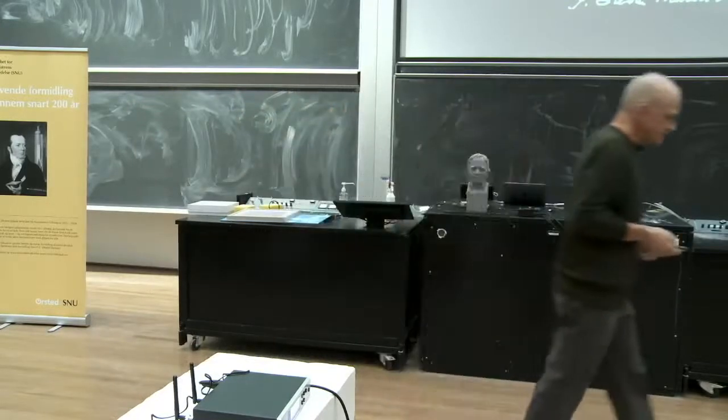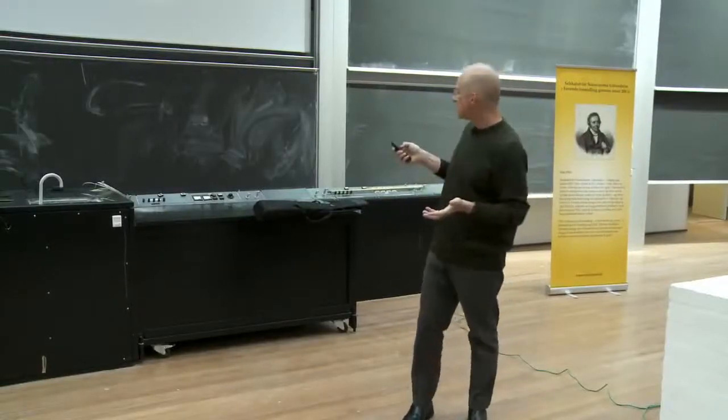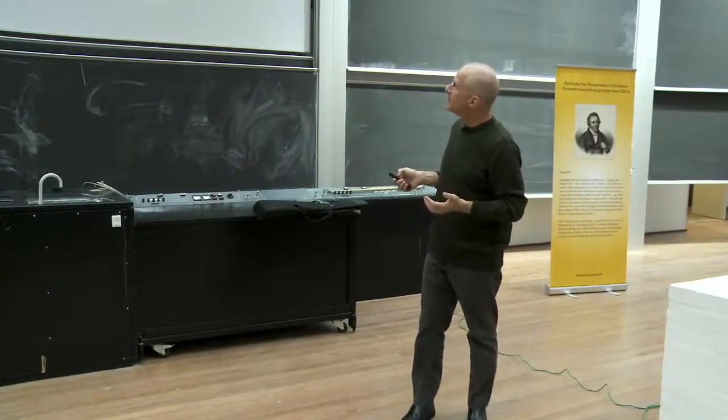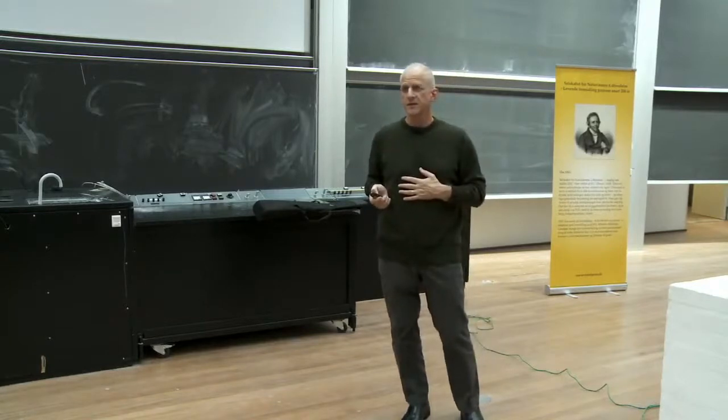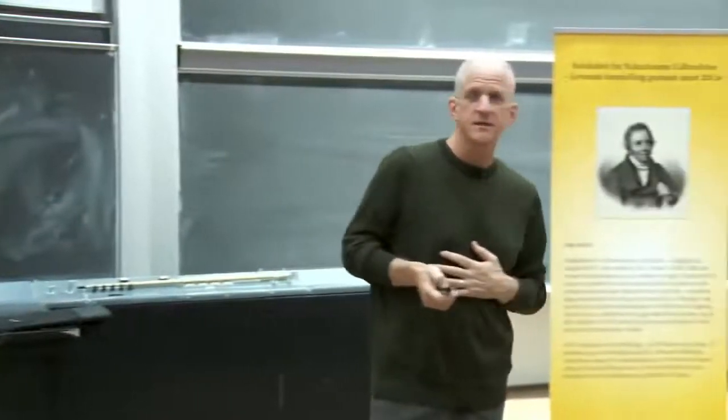In the decades that followed Ørsted's experimental discovery, the rest of the story was mapped out by names you know: Ampere, Faraday, Maxwell, who ultimately unified into a beautiful framework all of the discoveries of Ørsted, Arago, Ampere, Faraday, into a single set of equations. And I'm not putting them up there to teach you a bunch of symbols. But rather to show that the entire electromagnetic story not only fit in this beautiful simple form, but that it was so elegant and so symmetric that it must be right.